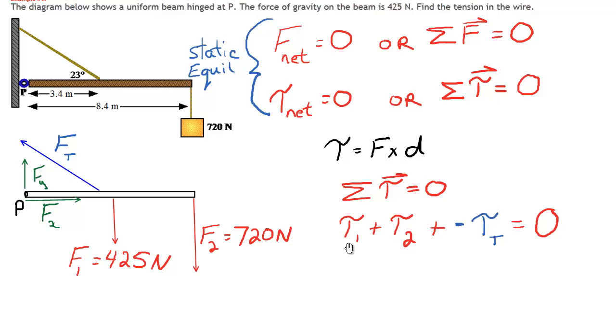Now torque one is force one times the distance to the pivot point. Force one is the weight of the beam. It's right in the dead center of the beam. And if the beam is 8.4 meters long, the dead center will be at 4.2 meters. So torque one will be 425 times 4.2. Let's put that one in right away. Force times distance. Torque one will be 425 Newtons times 4.2 meters.